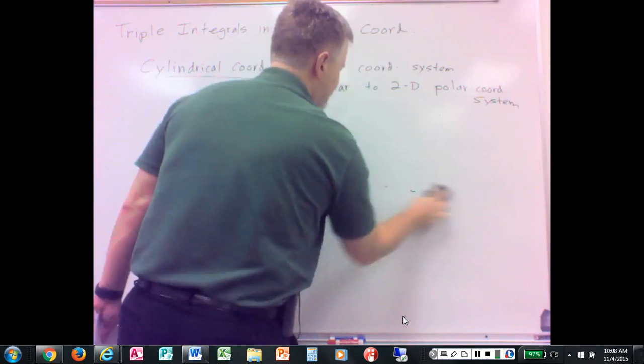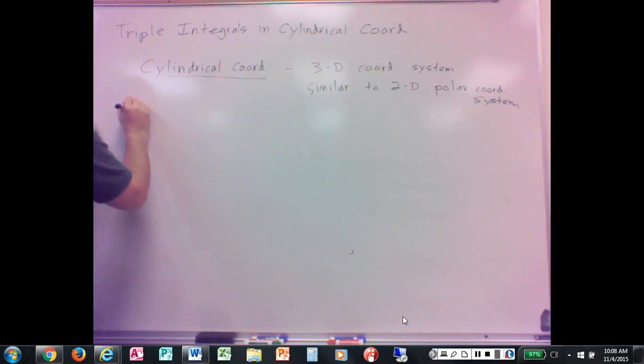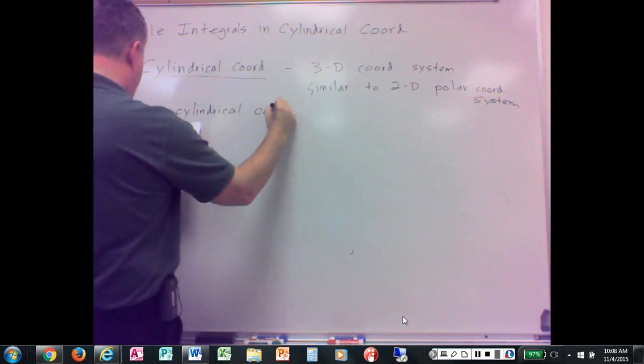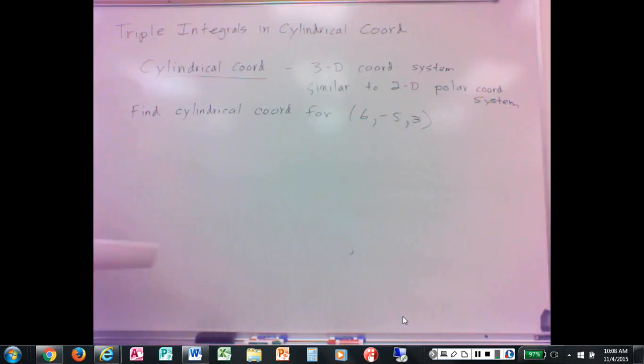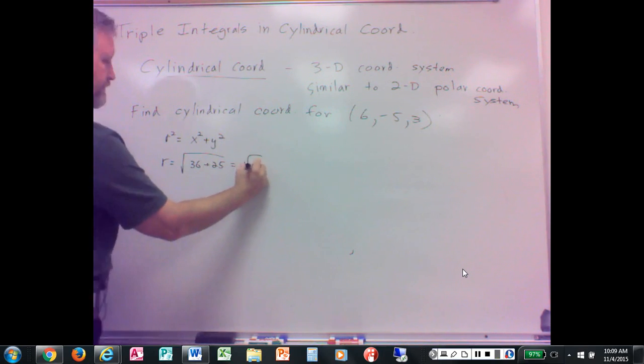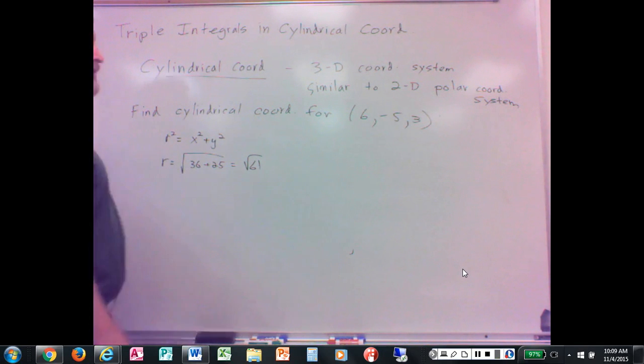All right. And let's do one going the other way. Find cylindrical coordinates for six, negative five, three. The xyz is six, negative five, three. So, we know that, how do we get r? r squared equals x squared plus y squared. And so, r would be the square root of that, 36 plus 25, square root of 61.